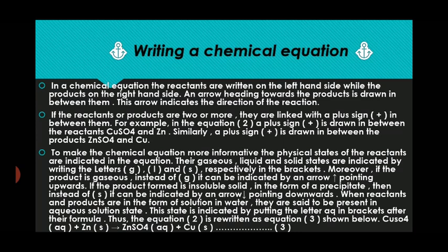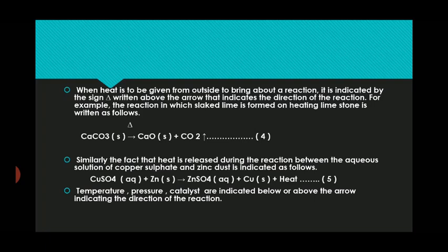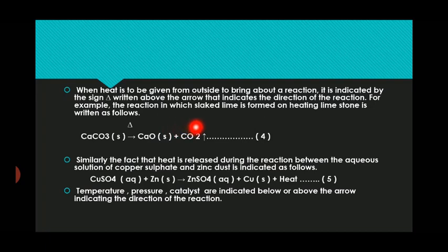The fourth point: when heat is to be given from outside to bring about the reaction, it is indicated by the sign delta, written above the arrow indicating the direction of the reaction. For example, calcium carbonate is a solid — here we apply heat, shown by delta above the arrow. The products formed are calcium oxide, which is solid, plus carbon dioxide gas, shown with an upward arrow. So delta above the arrow means we are applying heat.